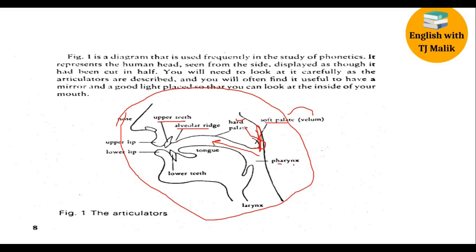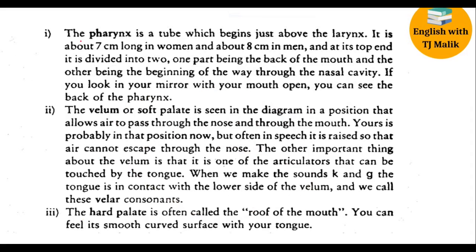Next we have the pharynx, which is very important from an articulatory point of view. The main articulators also include the upper lips and lower lips — these are all speech organs important in the production of speech sounds, and we call them articulators. In total, we have seven articulators in this discussion. Starting with the pharynx: it is a tube which begins just above the larynx, about seven centimeters long in women and about eight centimeters in men.